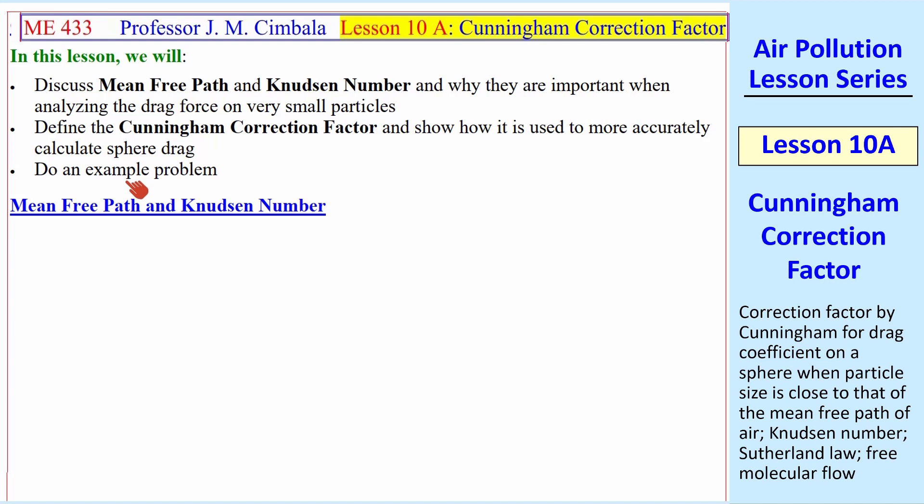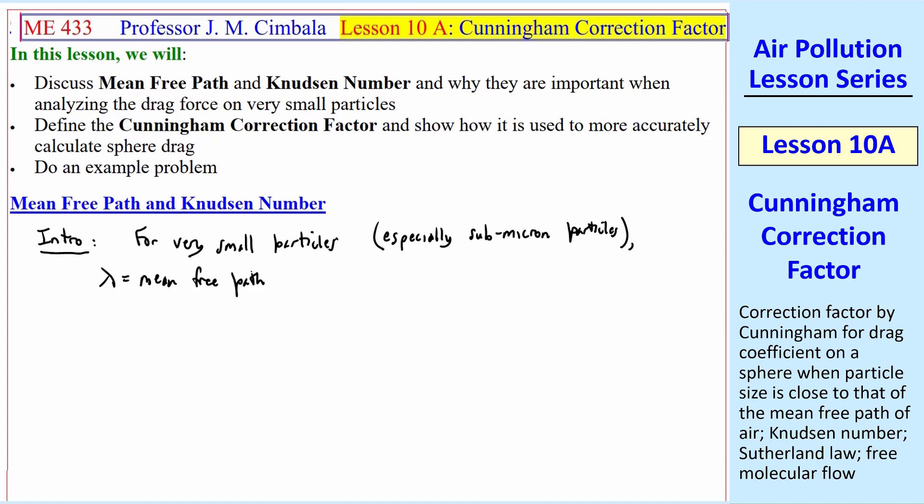I'll also do an example problem. By way of introduction, for very small particles, especially submicron particles, as we often encounter in air pollution problems, the mean free path lambda of the air is important. Why? Consider a small spherical particle of diameter dp.